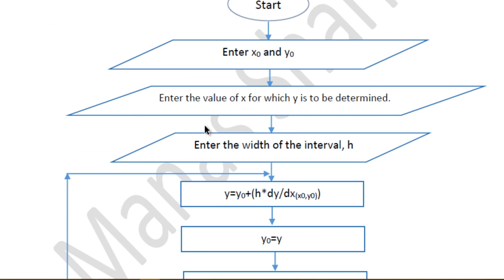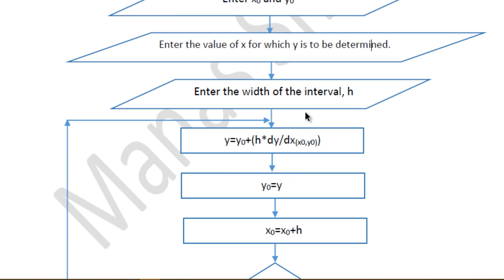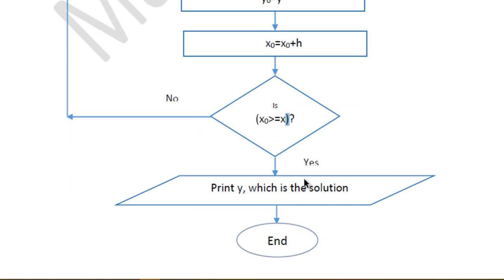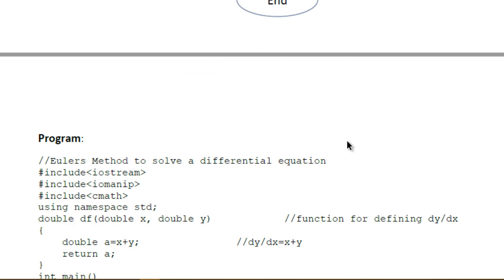The flowchart is also pretty similar. We have the initial values of x and y entered by the user, then we ask for the value of x for which we want y, then the width of the interval h. We find the new value of y using Euler's formula, make y0 equal to y, increment x0 by h, and keep repeating until we reach x. Then we print y as our solution.